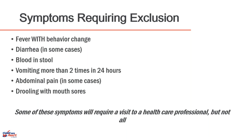Fever by itself is not an exclusion category if the child is exhibiting normal behavior, because fever is just a representation of an elevation of normal body temperature. A child who had an immunization and comes in the next day but is acting fine and still has a temperature above 101°F — if they're over two months of age — that is not a criteria for exclusion. Fever can also be caused by conditions such as rheumatoid arthritis or cancer or as a reaction to medications.